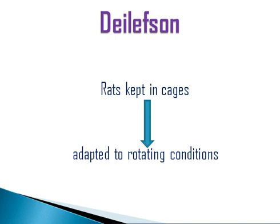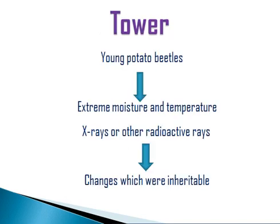Next, the scientist Lesson performed experiments on rats. He kept rats in cages and provided different rotating conditions for escape. After providing these different rotating conditions, variations were produced in the rats — they learned how to escape through the rotating conditions. These characters were transmitted from parents to their offspring and were also inheritable, supporting the Lamarckian theory of inheritance of acquired characters.